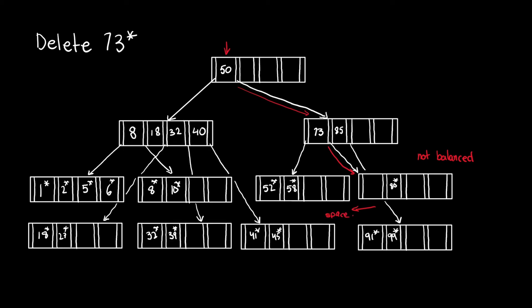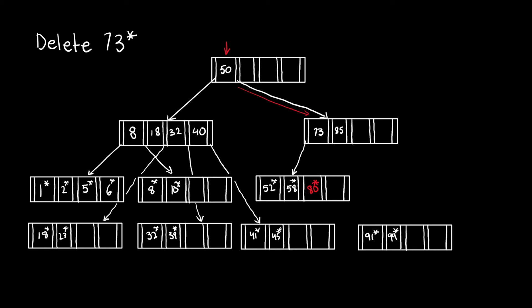This time, looking left, there is enough space, so we append 80 to that entry and delete the empty entry. After making these changes, we need to update the parent. Looking at the values 73 and 85, the pointer before 73 points to the entry now containing 80. But 80 is greater than 73, so this value is invalid and can be deleted. Then the pointer to the right of 85 points to the last child of the parent entry. After making these changes, the parent entry is now less than half full, so the tree is still not valid.